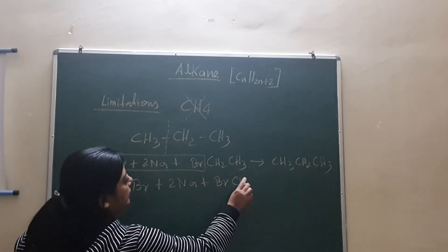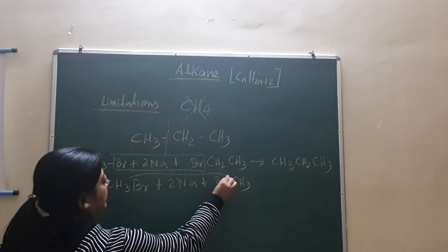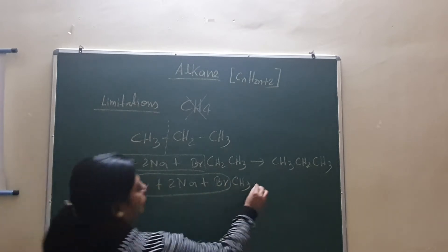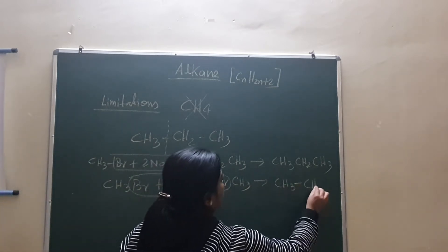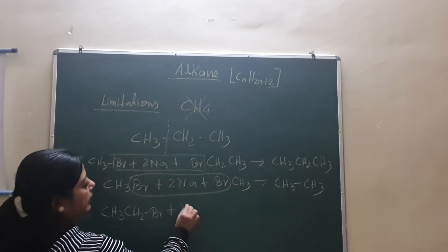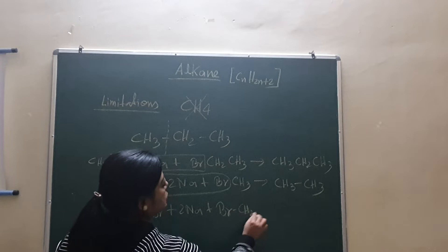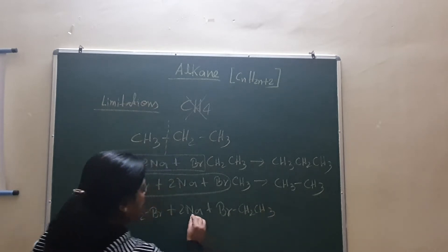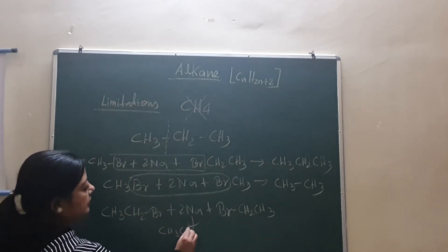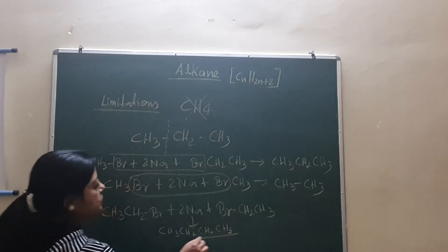Problem is: when in the beaker we do the reaction, we don't add just one molecule. We add some amount of methyl bromide and some amount of ethyl bromide. In that amount there are lakhs of millions of molecules. So when methyl bromide and ethyl bromide molecules meet each other, they make propane. But while moving around, two methyl bromide molecules can also meet each other. Then in that case we get ethane, CH3 single bond CH3.